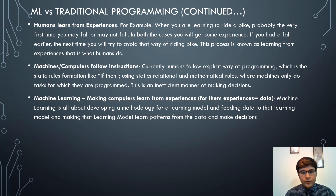Traditionally, computers follow a set of rules — if-then statements and exact algorithms — performing only the tasks for which they are programmed. This is an inefficient manner of making decisions. Machine learning comes into play to make computers learn from experiences. For machines, experiences are data. If you feed data and its corresponding output to a machine, it will build a model. Given future data, it will correctly predict the output — developing a methodology for a learning model, feeding data, and making the model learn patterns to make decisions.